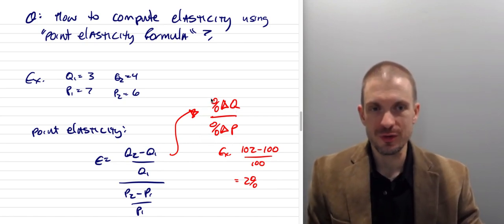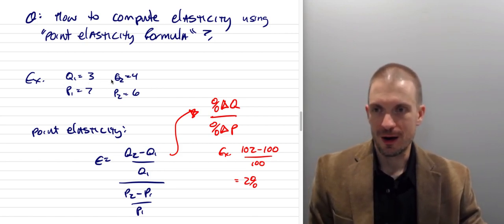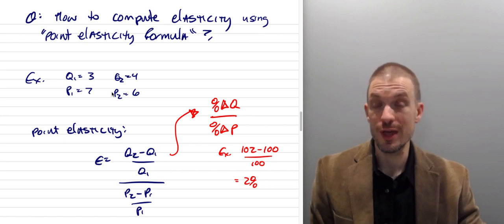All right, so let's see this with an example. So suppose our initial quantity is 3, our subsequent quantity is 4, our initial price is 7, our subsequent price is 6. So what's going on here? We had a price of 7, price fell to 6, and we're interested in the responsiveness of quantity demanded to that change in price.